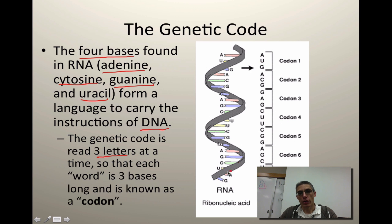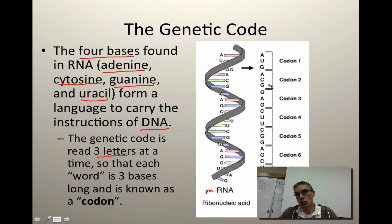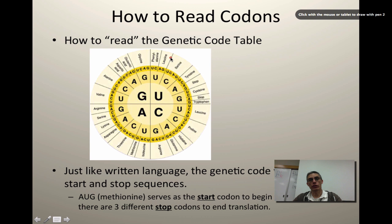Over here on the right, this is the RNA — more specifically, this is the messenger RNA that was created from that original DNA code found in the nucleus. They've basically taken each set of three nitrogen bases and segmented them up. These actually become the words, and they give a special name to these sets of three — they call them codons. What scientists have done is they've created something called a genetic code table to make reading that messenger RNA a little bit easier.